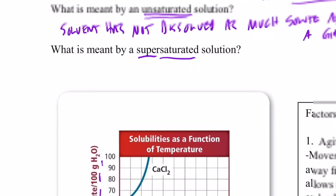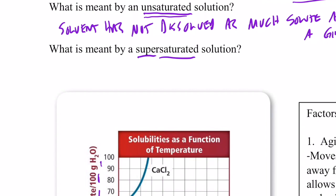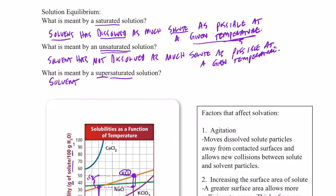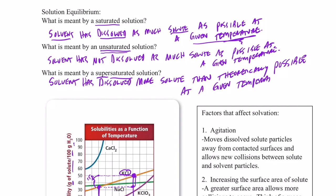Does that sort of make sense? All right. Well, let's define this last term here on this page, supersaturated, the one you might think is made up. Supersaturated simply means the solvent has dissolved more solute than theoretically possible at a given temperature. So it's dissolved more than it normally can at a given temperature. And so since you can dissolve more than it can at that temperature, we say that it is supersaturated.